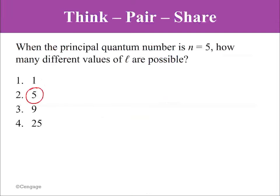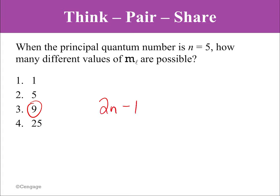When the principal quantum number is n equals 5, how many different values of L are possible? It is, of course, 5. Because there's n possible values of L for a particular state. For n equals 5, how many different values of the magnetic quantum number M sub L are possible? 9, because it's 2L minus 1.